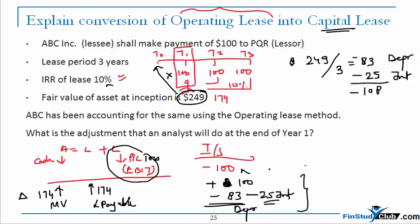So if you have to calculate the debt on equity, earlier there was no liability which was being recognized by the accountant, but now there will be a liability of 174.